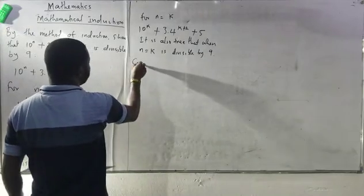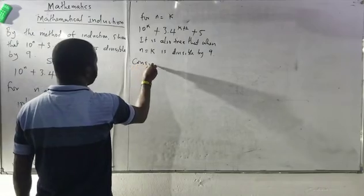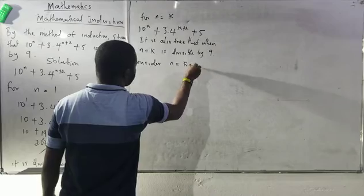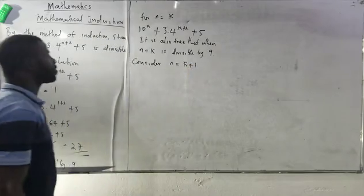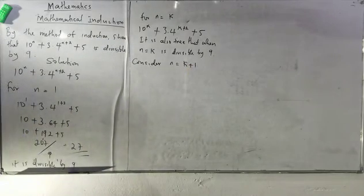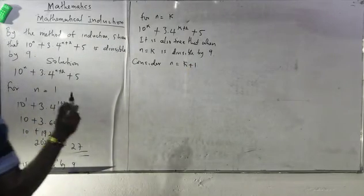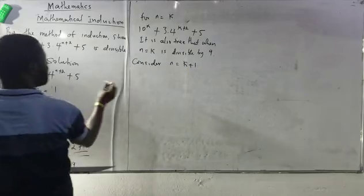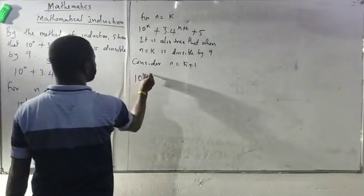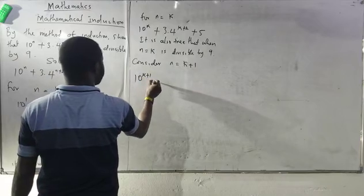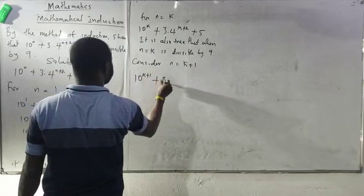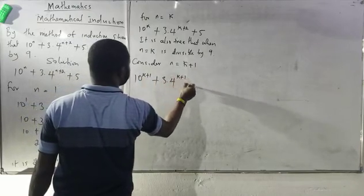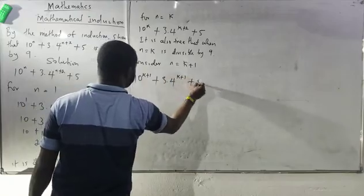Consider n equals k plus 1. At this junction, I will be mapping in 10 raised to the power of k plus 1, plus 3 dot 4 raised to the power of bracket k plus 1 plus 2, plus 5.